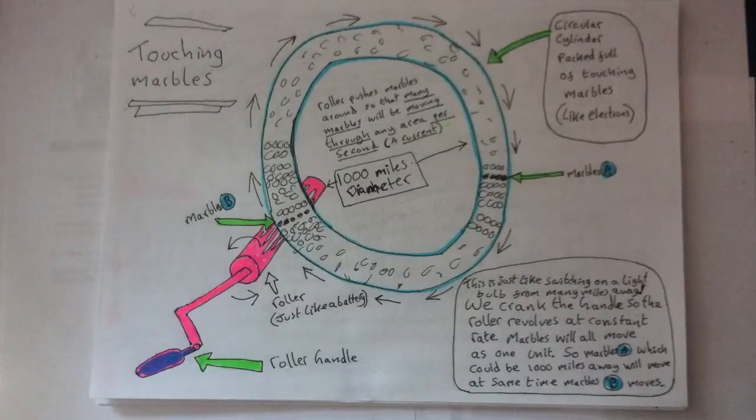Now, all the while the roller rolls at a steady rate, this current of revolving marbles will continue. So a push on the first marble will get that force transported in almost instant time to the end marble, which let's say is a thousand miles away.